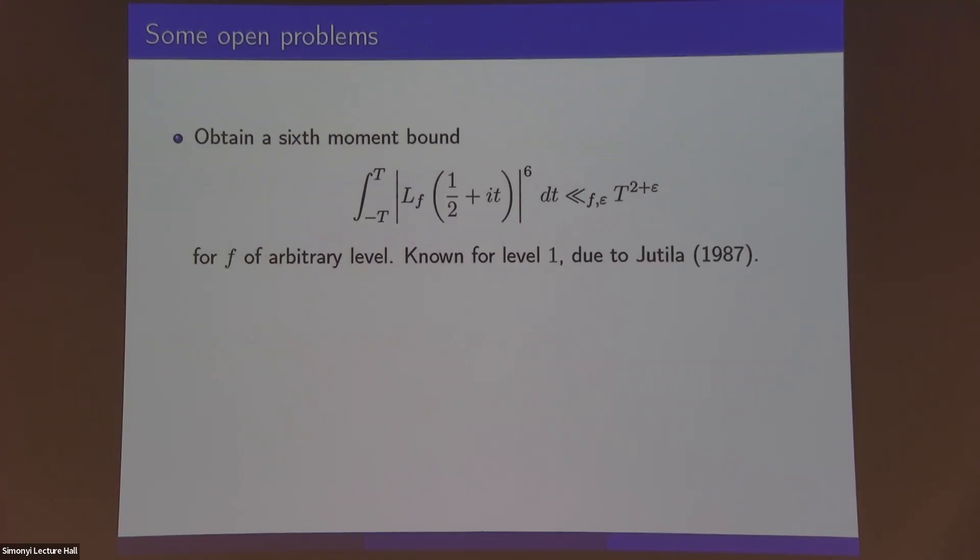Let me mention some open problems that are maybe not clearly related, but turned out to be related to the results that I just mentioned. In increasing order of difficulty, perhaps something that would be nice would be to obtain the following six-moment bound. This is an analog of Heath-Brown's 12-moment bound for the zeta function, if you're familiar with that, and it should be within reach. It's known for level one due to Jutila, and it would improve some of the results that I presented.